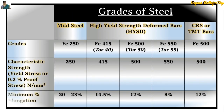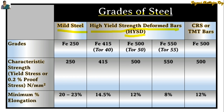Now we will see the specifications of different grades of steel. The different grades are: mild steel, High Yield Strength Deformed bars (HYSD bars), and CRS or TMT bars. CRS stands for Corrosion Resisting Steel and TMT means Thermo Mechanically Treated bars. The grade of mild steel is Fe 250. HYSD bars have three grades: Fe 415, Fe 500, and Fe 550. Fe 415 is also known as Tor 40, Fe 500 as Tor 50, and Fe 550 as Tor 55. The grade of CRS or TMT bar is Fe 500.